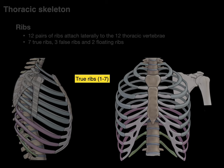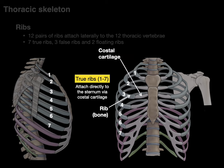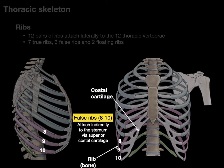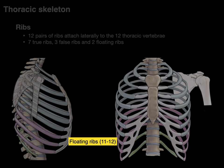The seven true ribs attach directly to the sternum via costal cartilage. The false ribs are eight, nine, and ten, and they attach indirectly to the sternum via more superiorly located costal cartilage. Finally, we have floating ribs, which are 11 and 12, and they're floating because there's no costal cartilage and they do not articulate with the sternum.